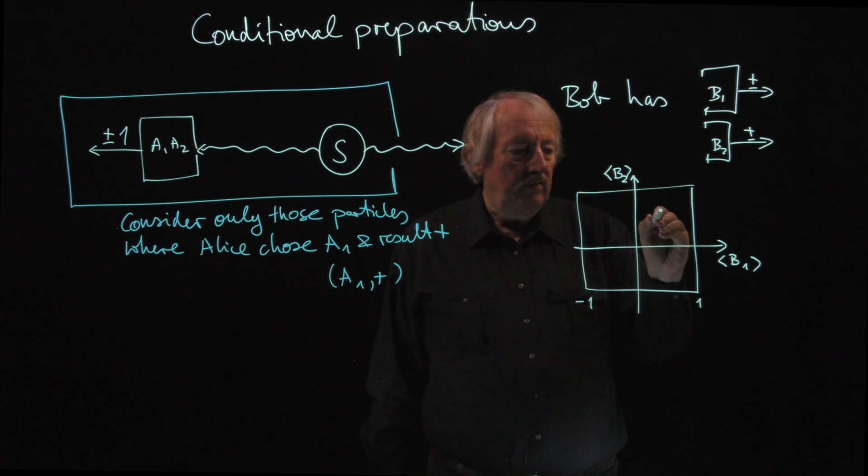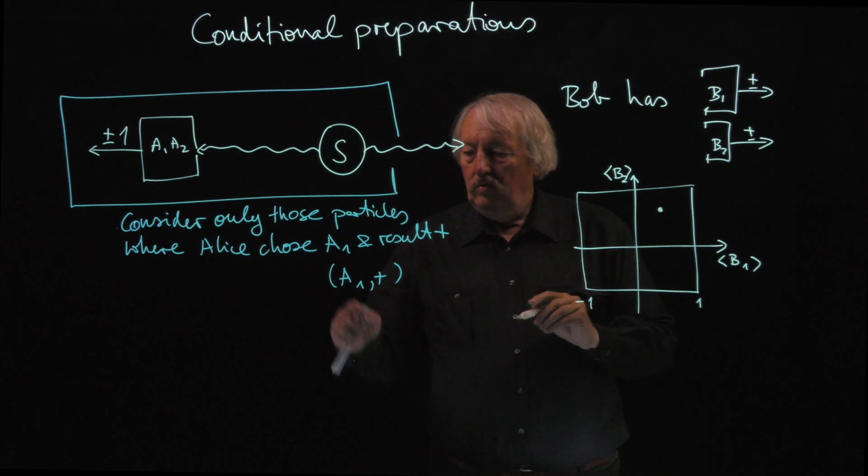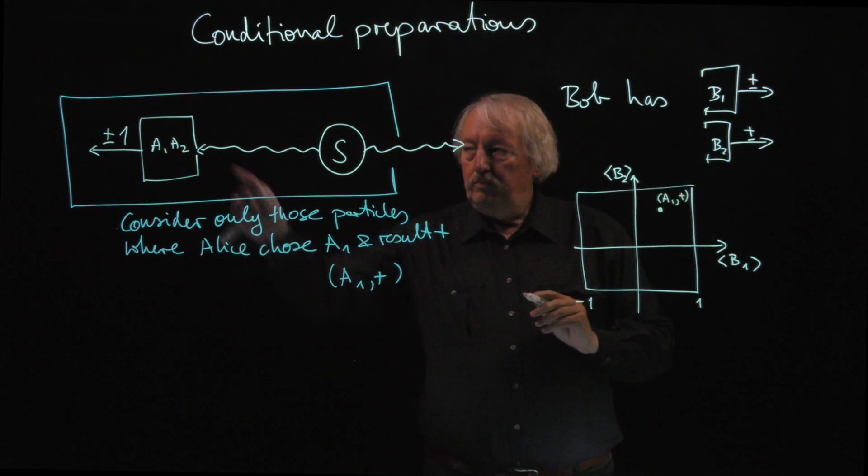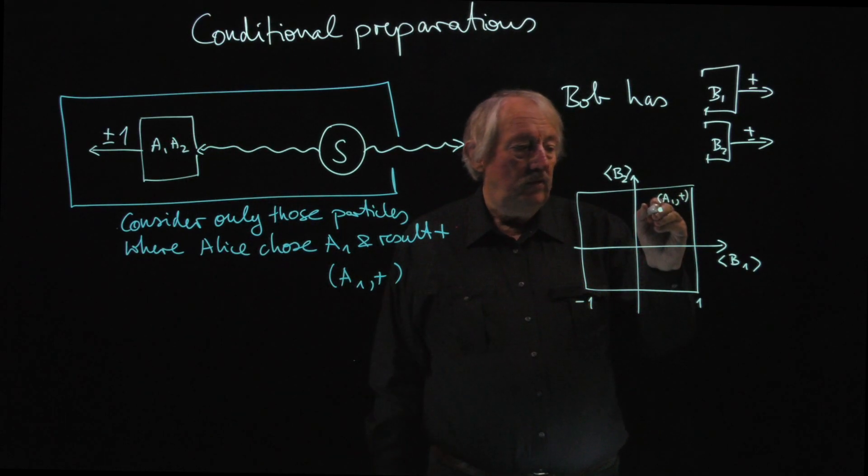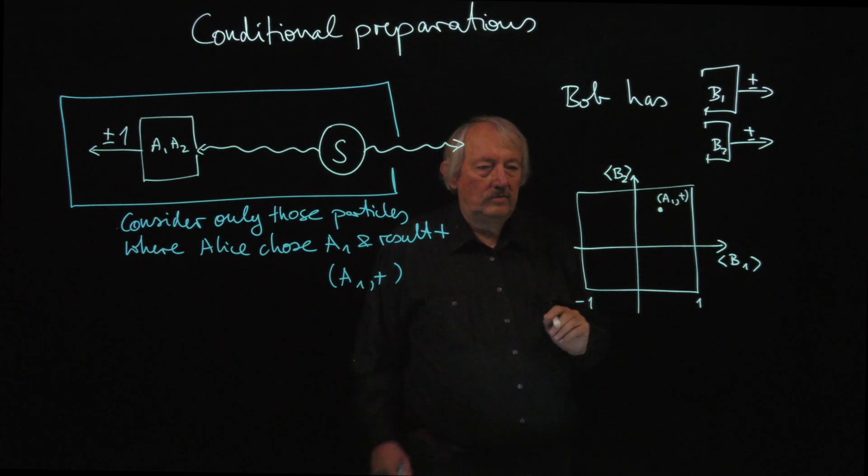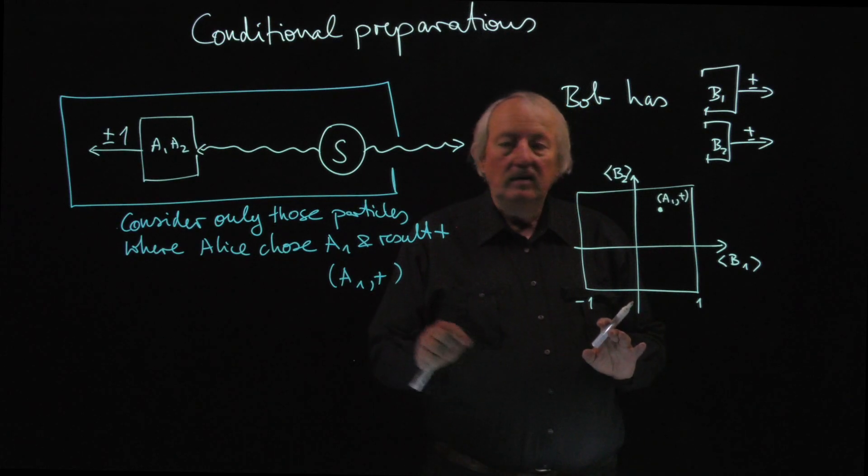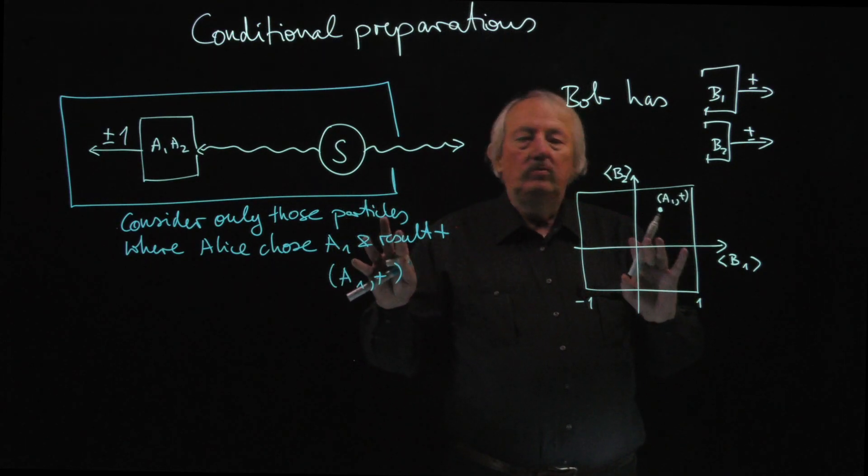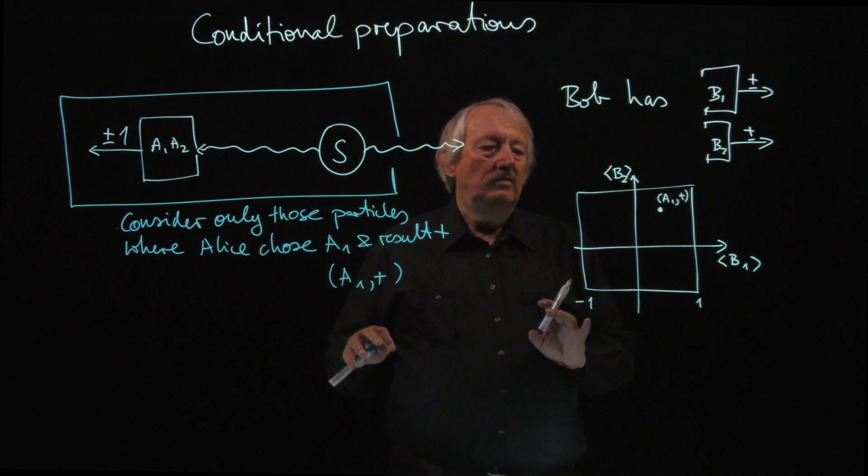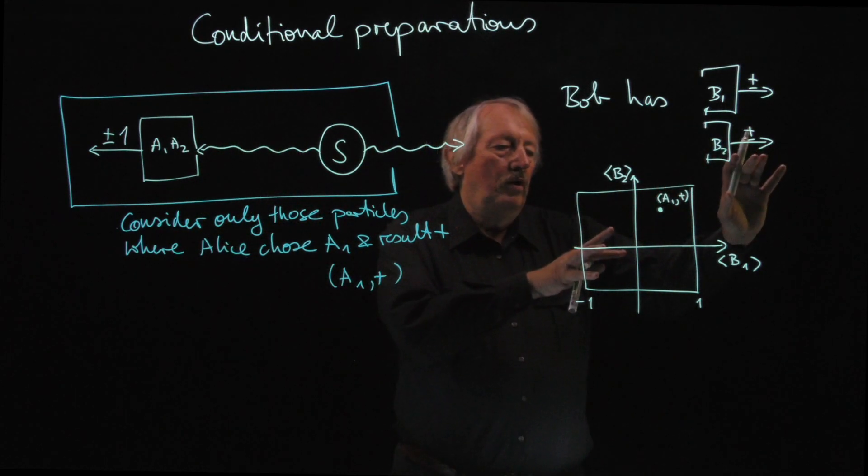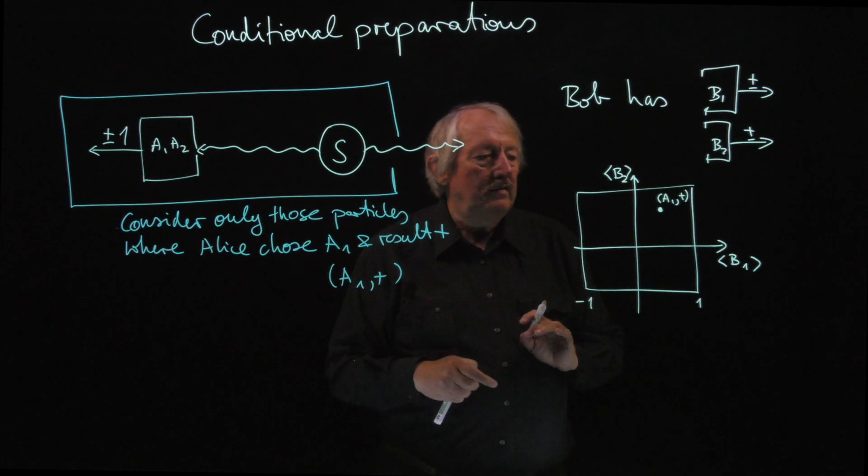And so this will give one point. So this point we could label with a1 plus. For this particular conditional preparation, we get a point in this diagram. So this is just a way of bookkeeping, of keeping track of all these probabilities. And this is a completely equivalent way of talking about correlations. Just to separate them according to what Alice did and what Bob sees. There's nothing deep about this.